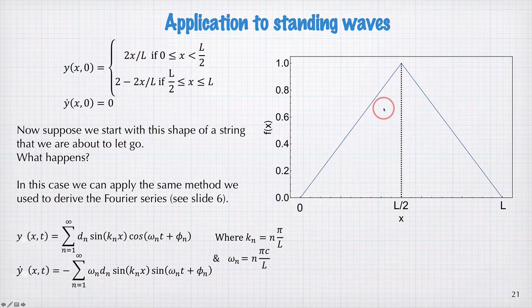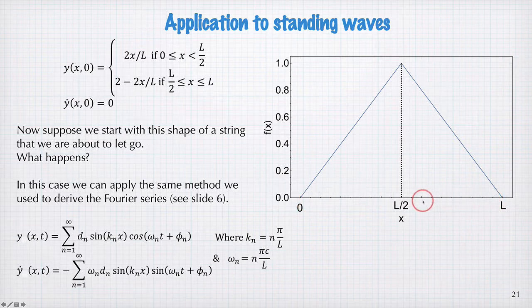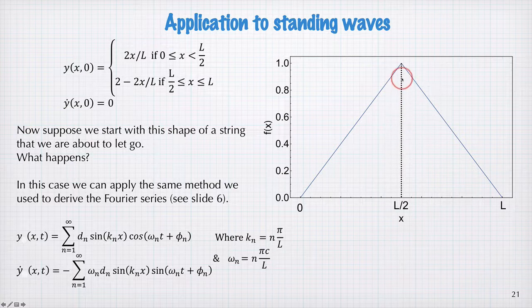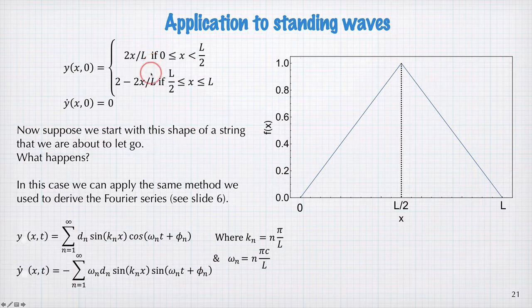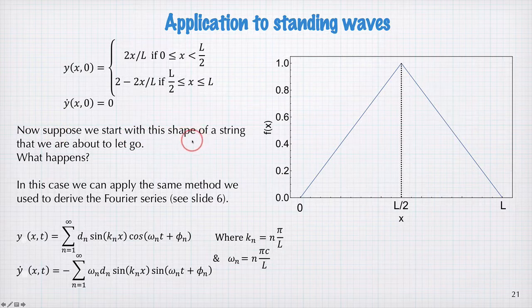We have a string that has its equilibrium position sitting along the axis here, but we're going to give it an initial condition, where we just pull it out sideways, up to some height, in the centre of the string. So, it makes a triangle, and we're going to hold it there stationary. So, the initial condition is this function here, which we can write like this, and the initial velocity is zero, because we're holding it still and letting it go. So, this is the starting shape of the string, and when we let it go, what happens?